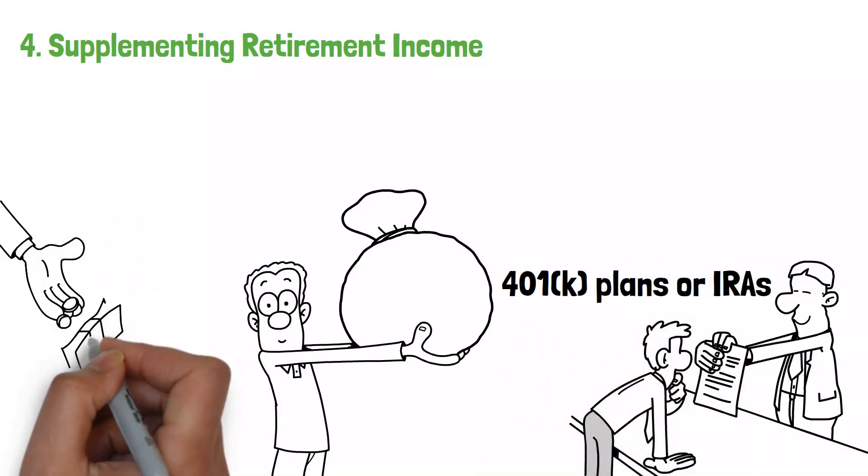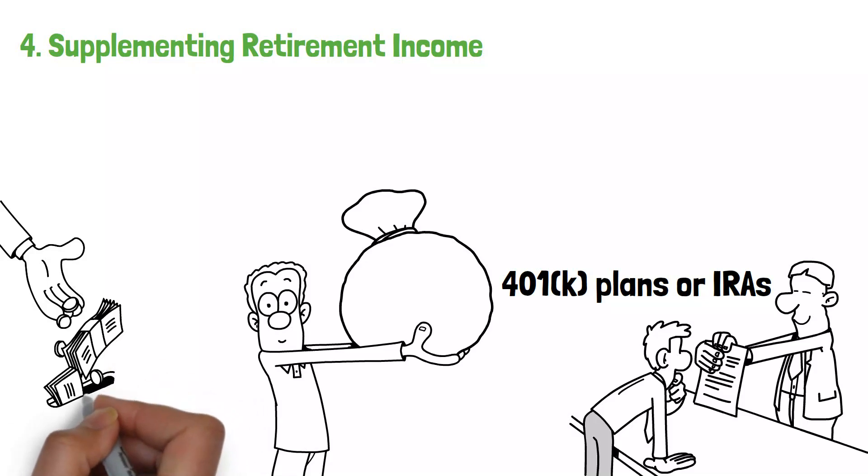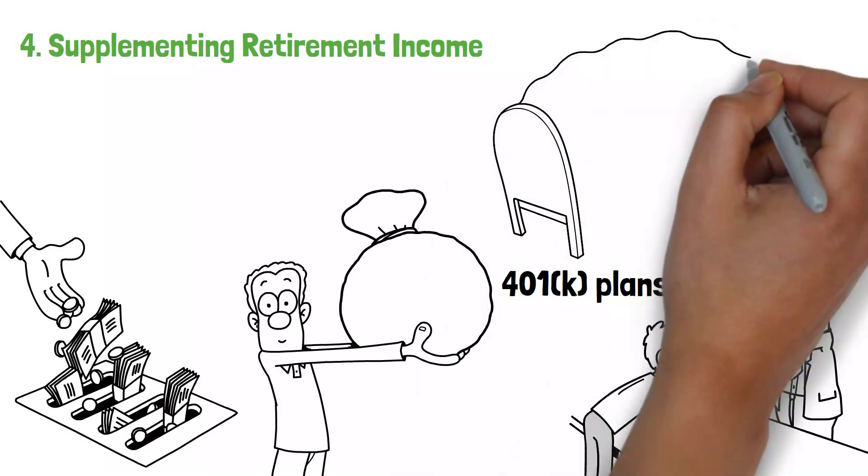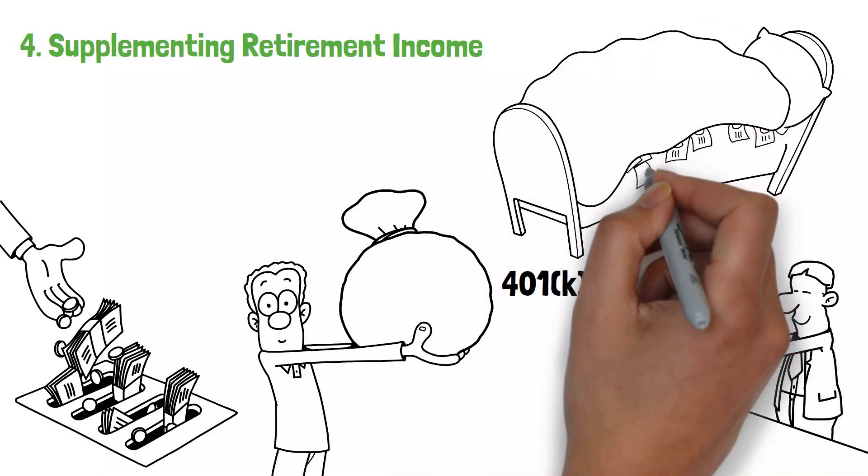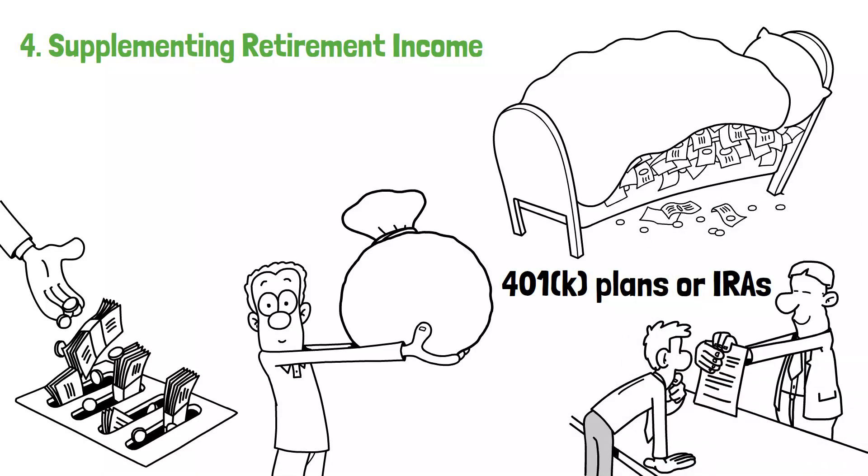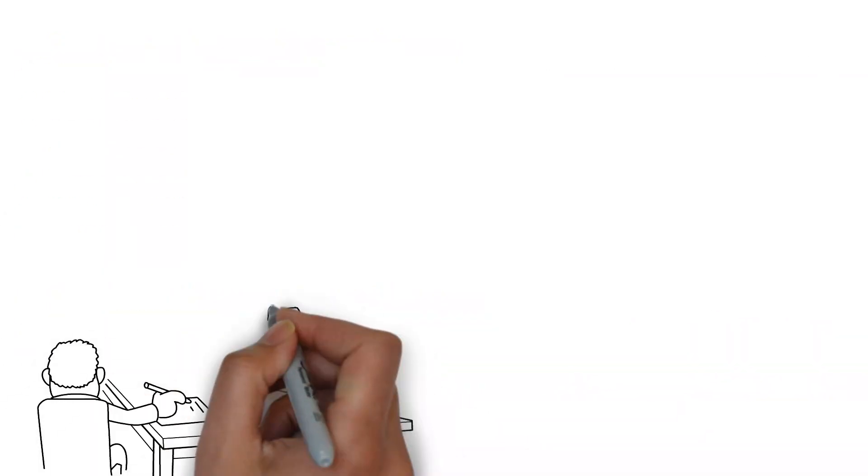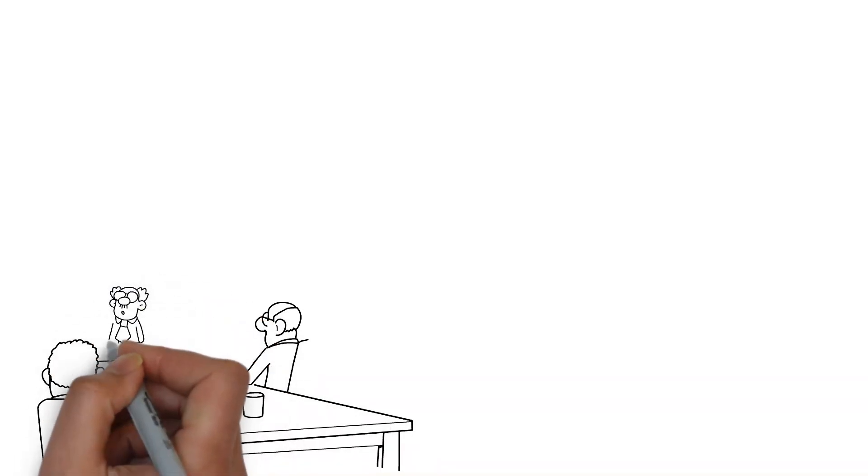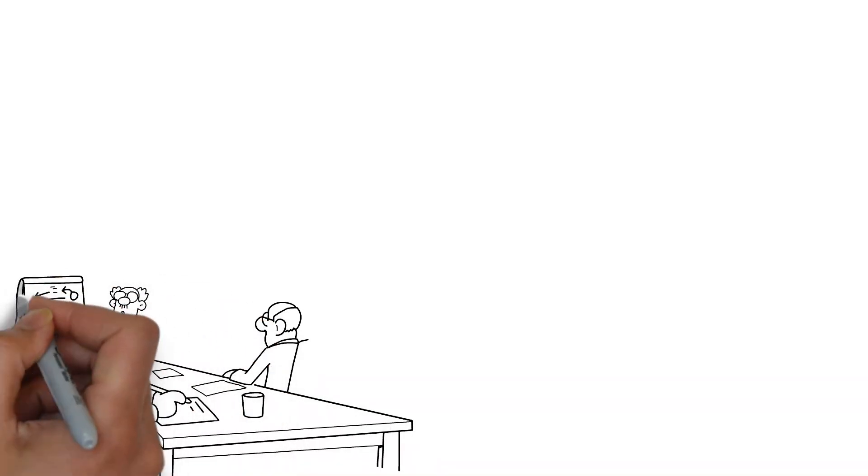To maximize the possibilities of life insurance for retirement income, start early and make continuous contributions to the policy. The longer the insurance is allowed to grow cash value, the greater the potential retirement income. Working with a financial advisor may also help you establish a withdrawal plan that reduces taxes while ensuring the sustainability of your retirement money.